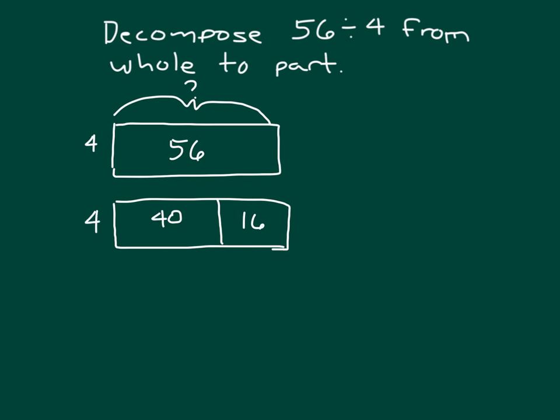The 4 stays the same, so we're able to figure out each of those numbers. What times 4 gave you 40? Right, 10. And what times 4 gives you 16? Right, 4. And when we put those two together — 10 and 4 — what do we get? Right, we get 14, which we will write up here as our answer.